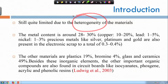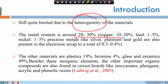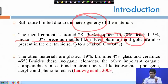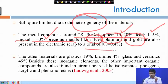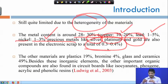This heterogeneity is causing a big problem in terms of proper recovery. In terms of the different metals present, we have around 10 to 20 percent copper, 1 to 5 percent lead, 1 to 3 percent nickel, and silver, platinum, and gold at around 0.3 to 0.4 percent. That 0.3 to 0.4 percent may not sound a lot, but given the total amount of waste generated, it is actually a substantial quantity.